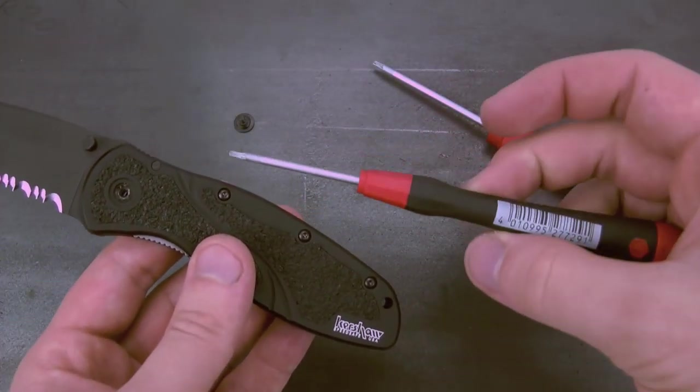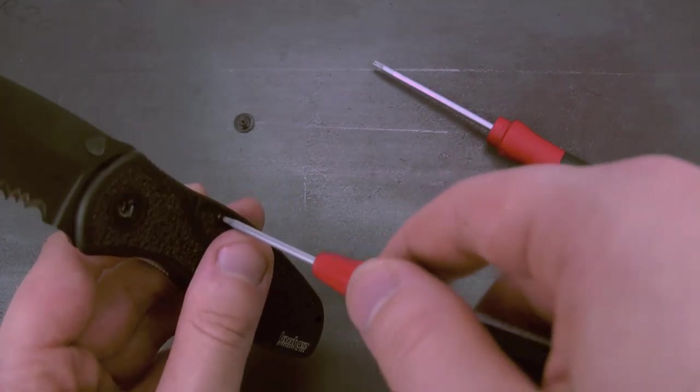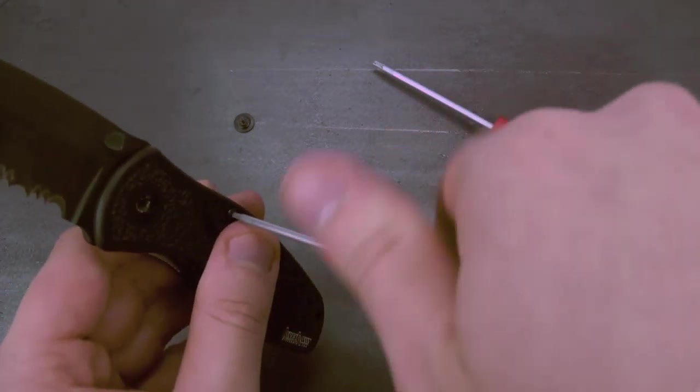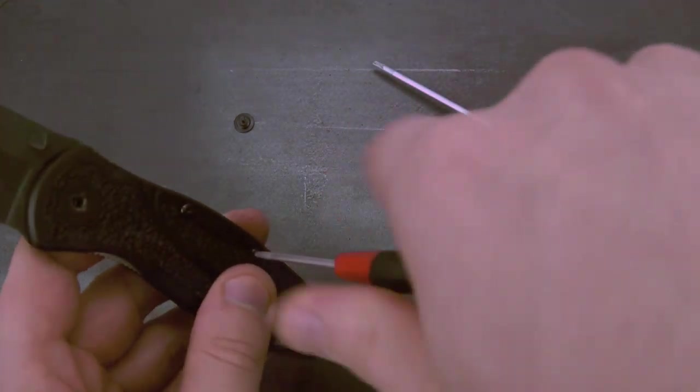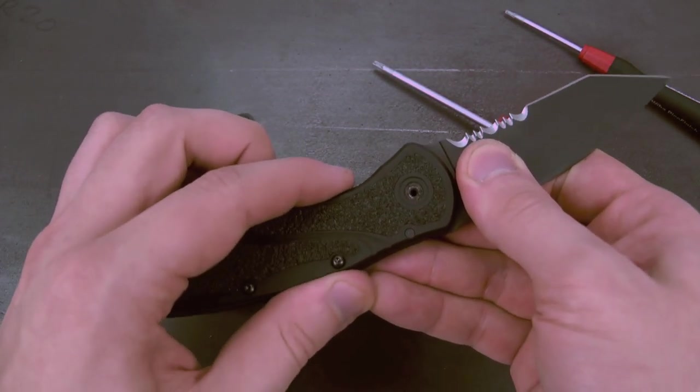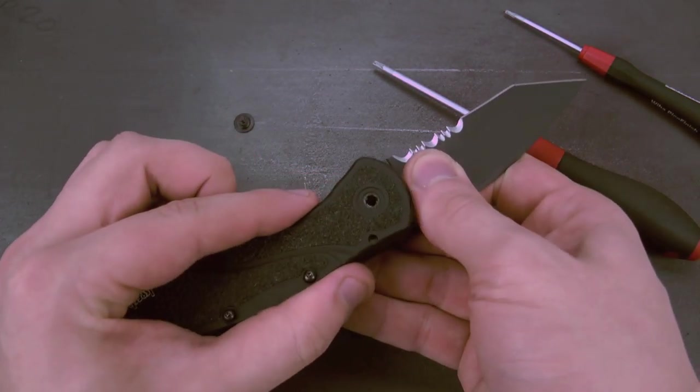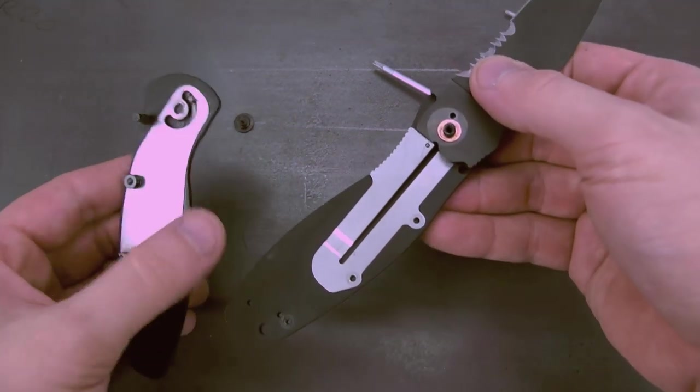So, there we go. And then I'm going to use a Torx T6 driver for the body screws. There we go, those are all unscrewed. All I'm going to do is just pop off the front scale, just like so. And there you have it.